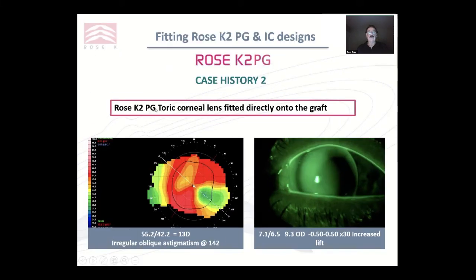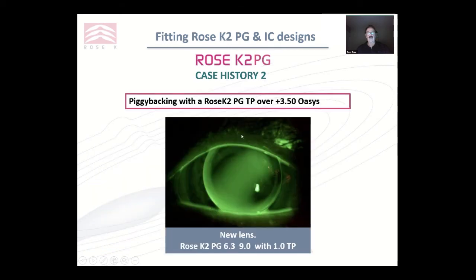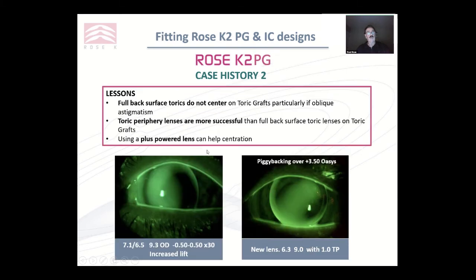Case history two: this is a post-graft toric cornea fitted directly onto the graft. I fitted a 7165 lens — the lens always located nasally and I couldn't get it to sit centrally. So I piggybacked it over a plus 350, and immediately got much better centration using just a toric periphery rather than a full back surface toric on a graft. What I learned from that was that full back surface torics are not particularly useful on toric grafts — they often will not locate, particularly if the astigmatism is oblique. Toric peripheries are more successful, and using plus power lenses can help centration.